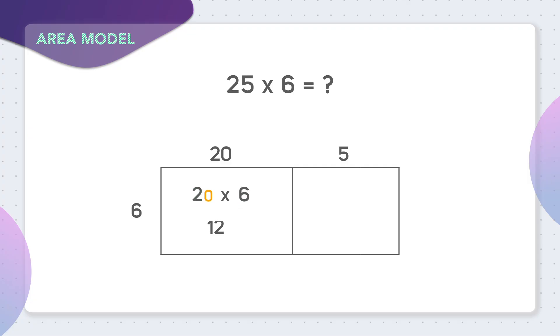I know 2 times 6 equals 12, and then we just add in that one zero that we ignored. So 20 times 6 equals 120.